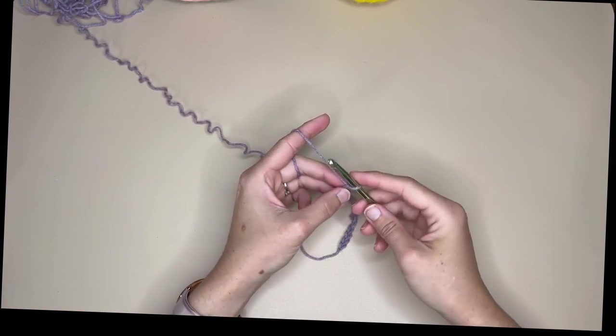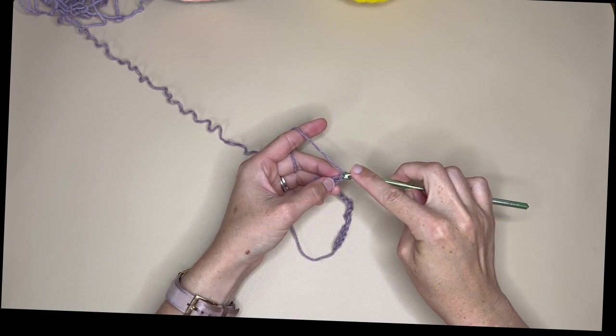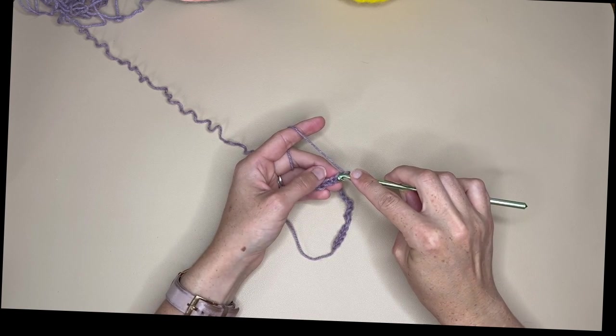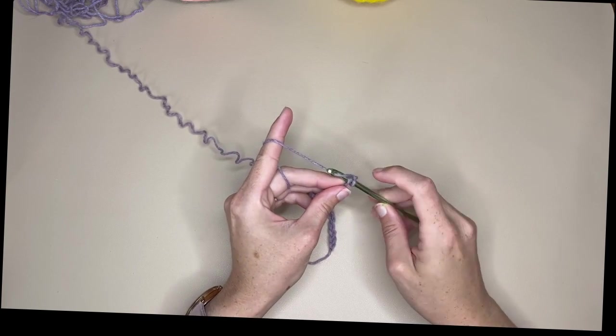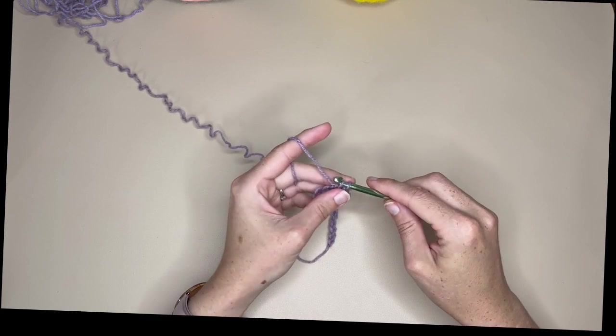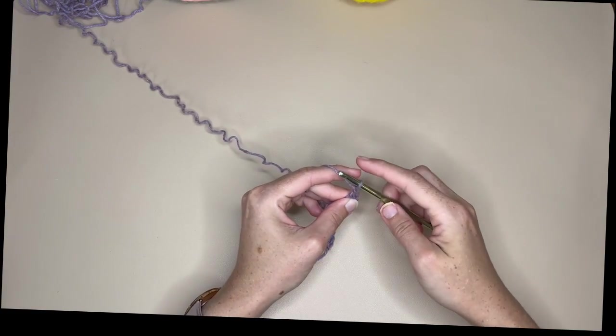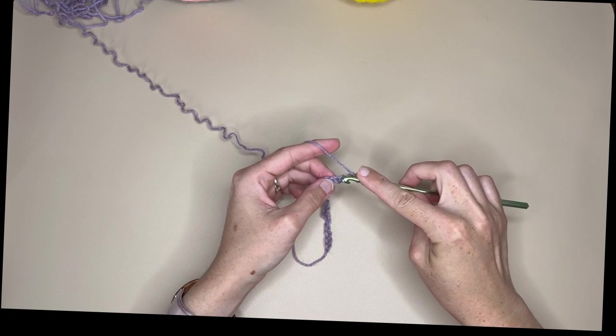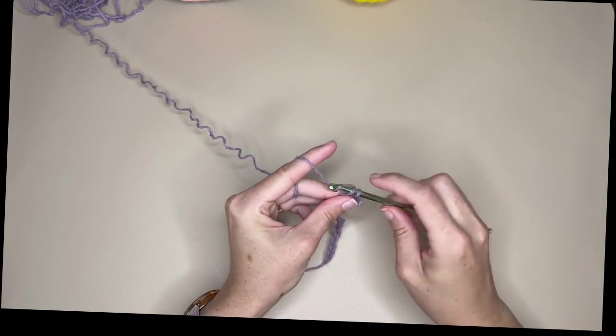We are going to start with our foundation row. So we're going to skip the first chain. We're going to do a single crochet into that second one. So just insert your hook, grab your yarn, pull through, grab your yarn, pull through those two loops, chain one, skip the next one, do a single crochet into that one after.